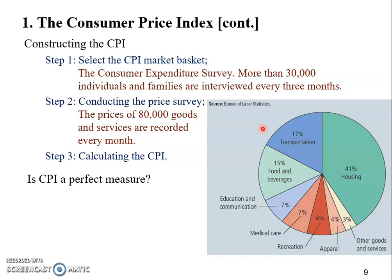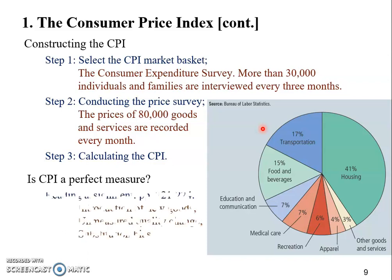Is the CPI a perfect measure? Of course not — in social sciences, nothing is perfect. You can find more information about why CPI is imperfect in the textbook. For example, with technological innovation we keep introducing new goods to the market every year. However, since the CPI has a fixed market basket, we are not going to change the goods or services in the basket, so we will miss the influence from the prices of new goods and services.